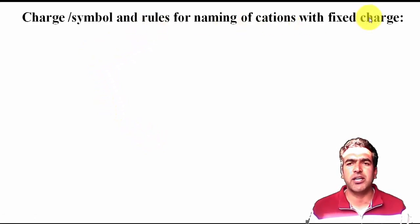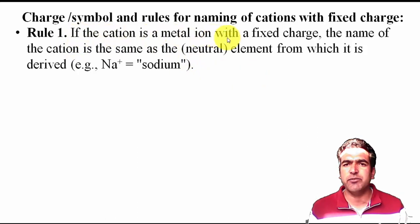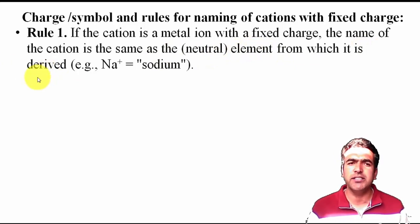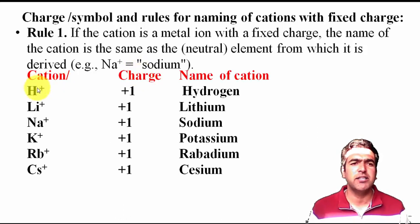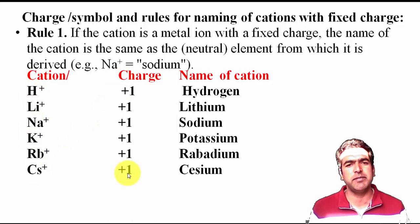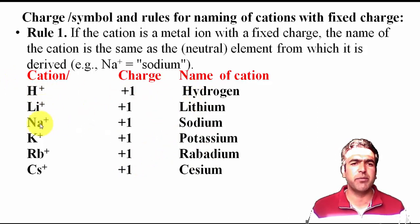Rules for naming cations with fixed charge: if the cation is a metal ion with a fixed charge — meaning only one possible charge — the name of the cation is the same as the neutral element from which it is derived. For example, Na⁺ is also called 'sodium.' The elements in group 1 — hydrogen, lithium, sodium, potassium, rubidium, cesium — always have a fixed plus-one charge, and their cation names are the same as the element names.